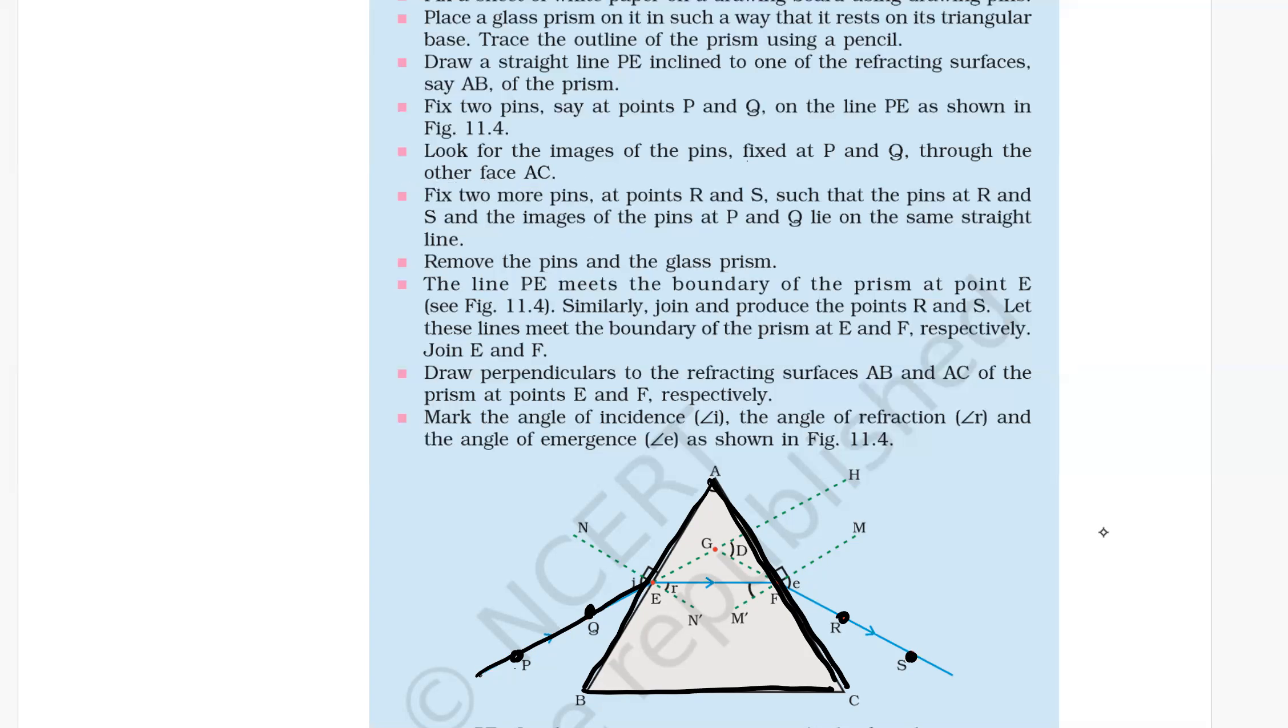Join the lines. The line PE meets the boundary of the prism at point E. Similarly, join and produce the points R and S.